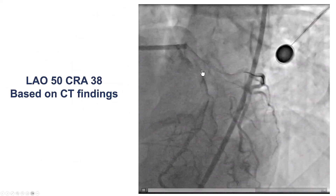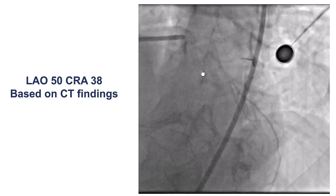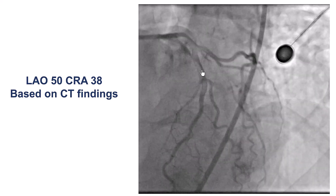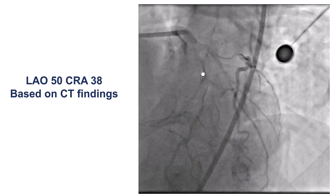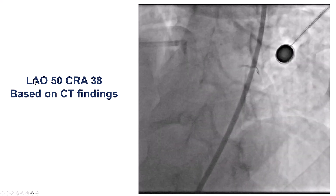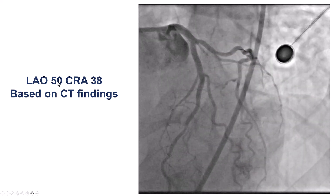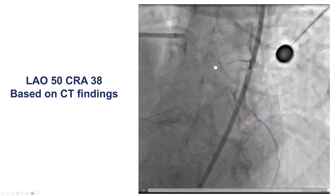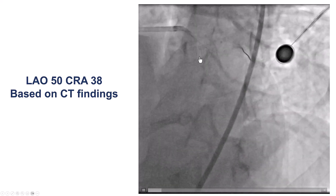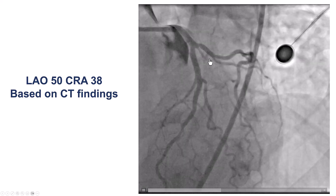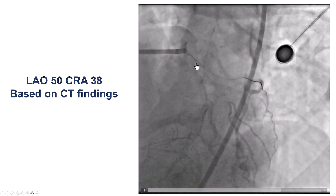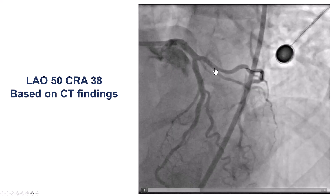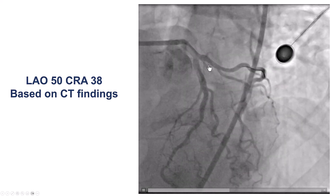Another benefit of using a coronary CT is that we could determine the optimal view for visualizing the occlusion. It was actually a very steep LAO — 50 LAO, 38 cranial — and by doing this, we can now see much better a separation between the LAD, circumflex, and the Ramos branch, and we can see the proximal cap a little bit better.